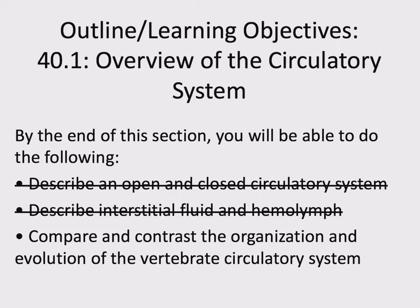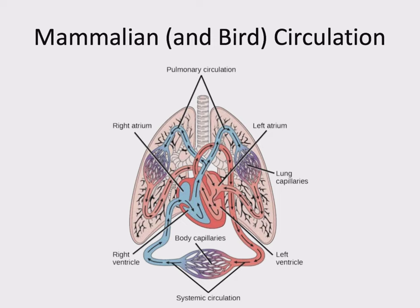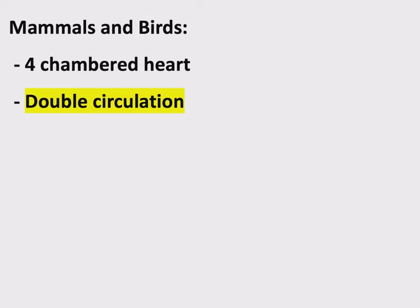There's one last topic worth discussing: comparing and contrasting vertebrate circulatory systems. The circulatory system we've been looking at — the four-chambered heart — is what we see in mammals and birds. It's called double circulation because it is basically a figure eight: the systemic circuit and the pulmonary circuit are the two main circuits. Double circulation is defined as flow of blood in two circuits — the pulmonary circuit through the lungs and the systemic circuit through the organs and the body.